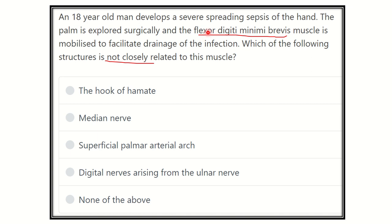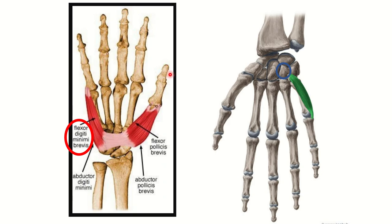The flexor digiti minimi brevis — 'digiti minimi' meaning the small digit — is the muscle of the little finger. Here we can see the thumb and the little finger, and this is the flexor digiti minimi brevis muscle. It is located in the medial aspect of the palm of the hand and attaches to the little finger, as seen in this picture.